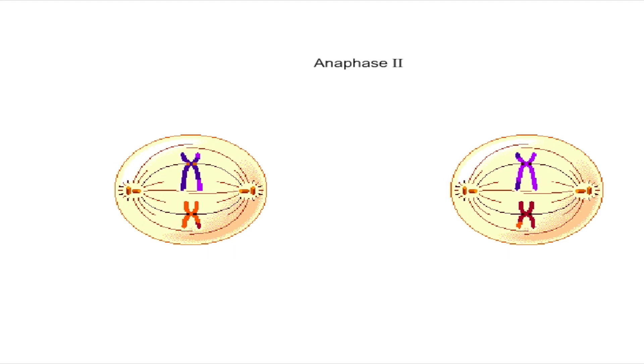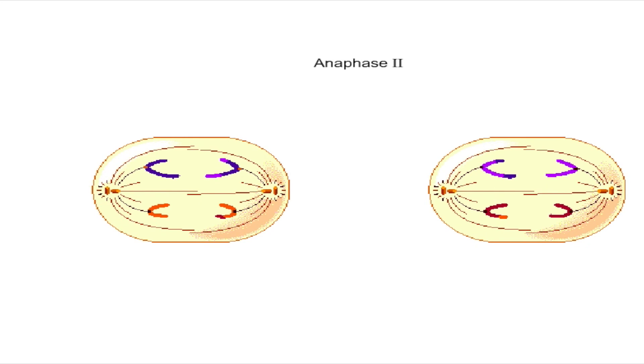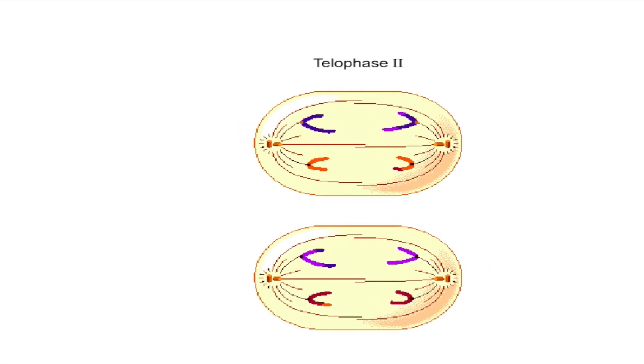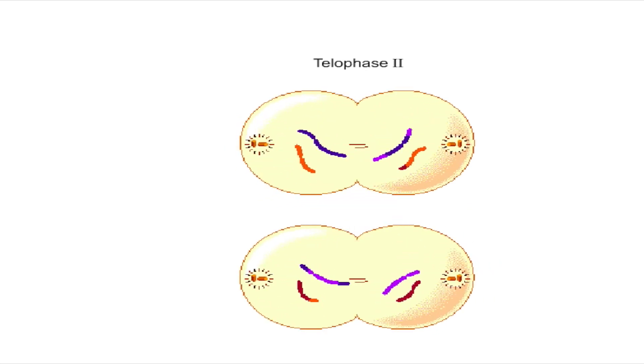During anaphase two, sister chromatids separate at their centromeres. The separated chromosomes, now called daughter chromosomes, are pulled to opposite poles. In telophase two, a nuclear envelope forms around the chromosome sets at each pole while the chromosomes become more extended.